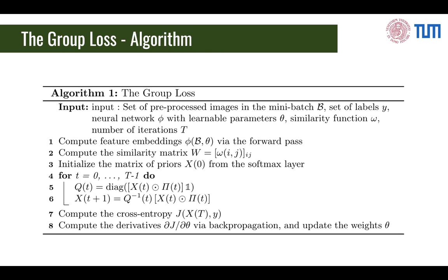Here we show the entire algorithm. Our CNN computes the priors and the feature embeddings via the forward pass, and uses those embeddings to build a similarity matrix. Then in an iterative procedure, it mixes the prior information with the similarity information, refining the priors. Finally, our method computes cross-entropy and passes the gradient via backpropagation to the network.